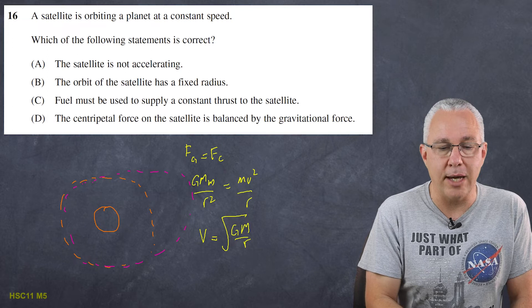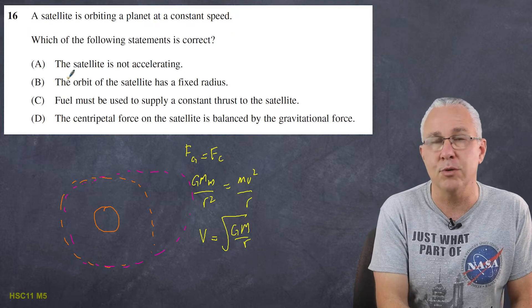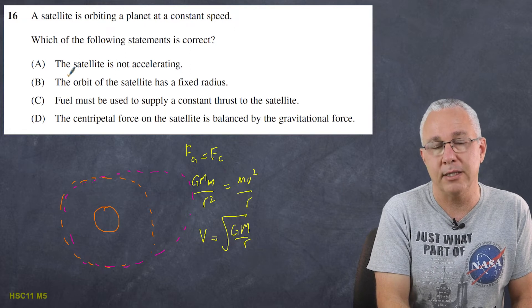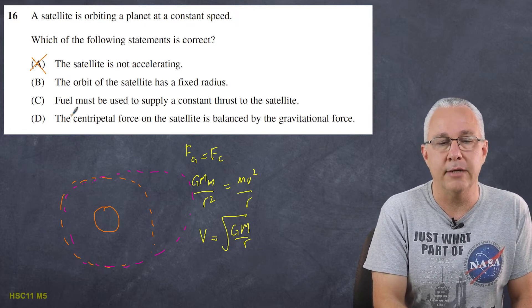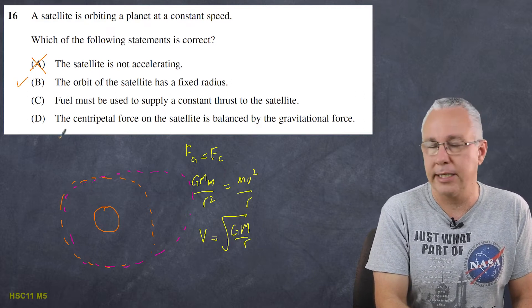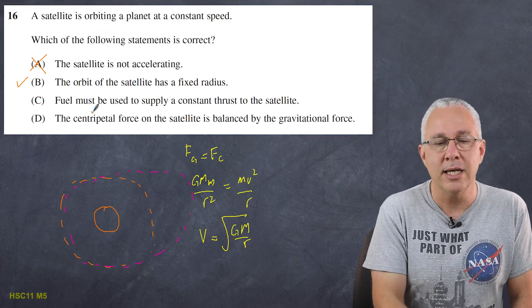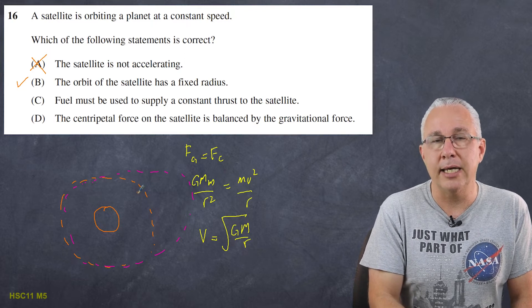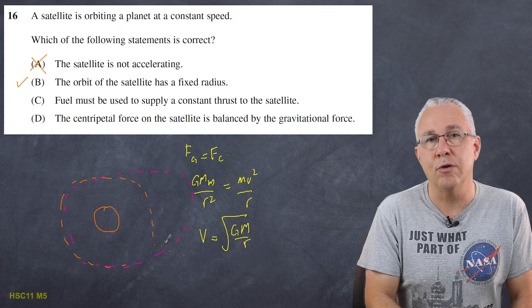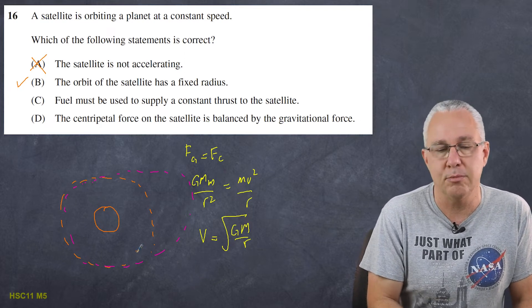And so thinking through our responses what we get is this satellite is not accelerating. Well it's experiencing a centripetal force so therefore it has to be accelerating. The velocity is changing due to the fact that its direction is always changing. So a is incorrect. b the orbit of the satellite has a fixed radius. Well we just established that so that is our correct answer. But let's just check the other ones too. c fuel must be used to supply a constant thrust. Again this object is basically traveling at a constant speed and if the force were to be taken away it would move off at a tangent. In other words it has inertia. It keeps going in that direction. The only reason it changes direction is the centripetal force.